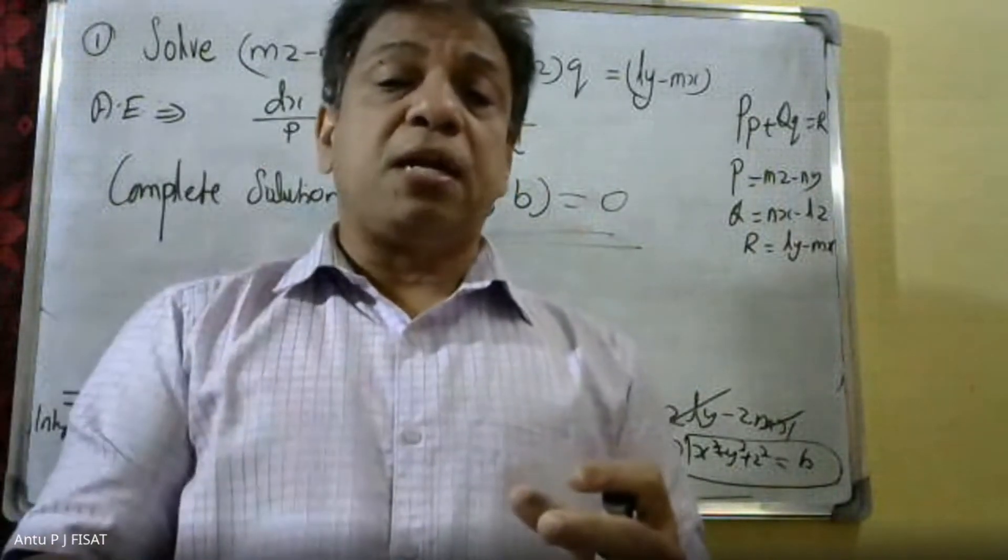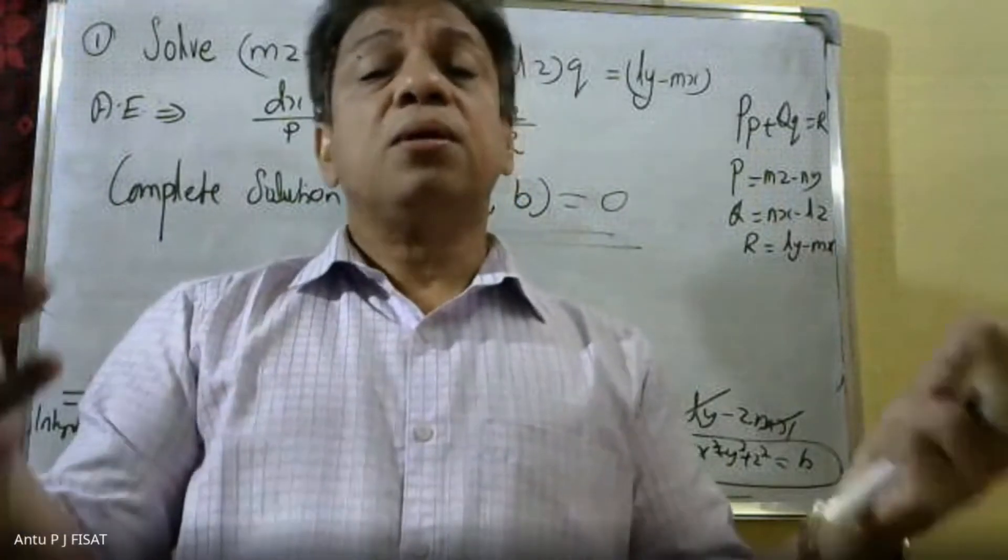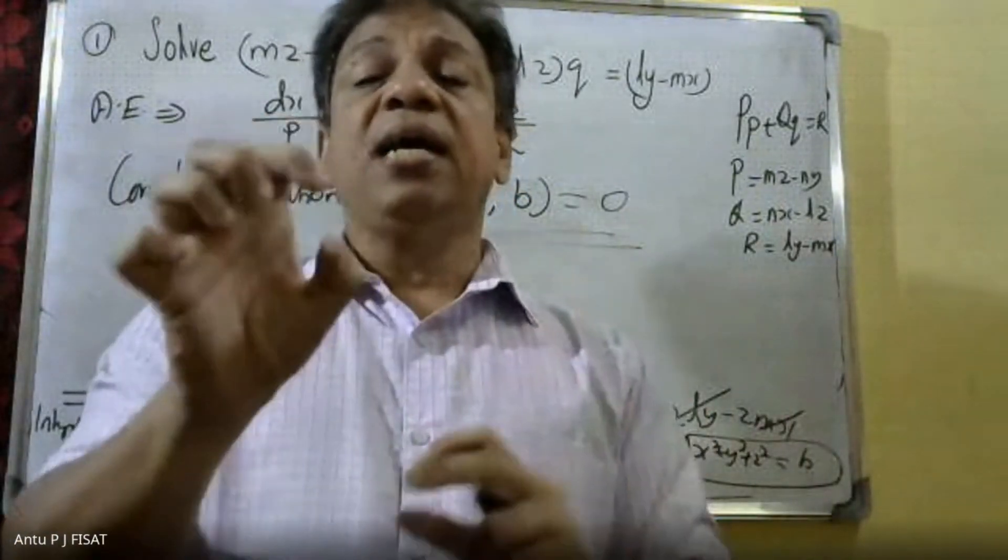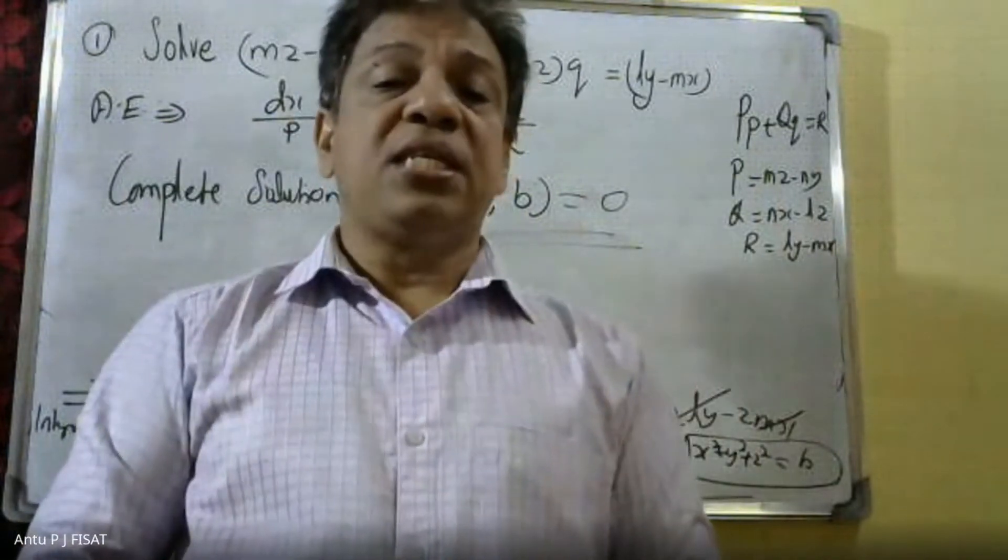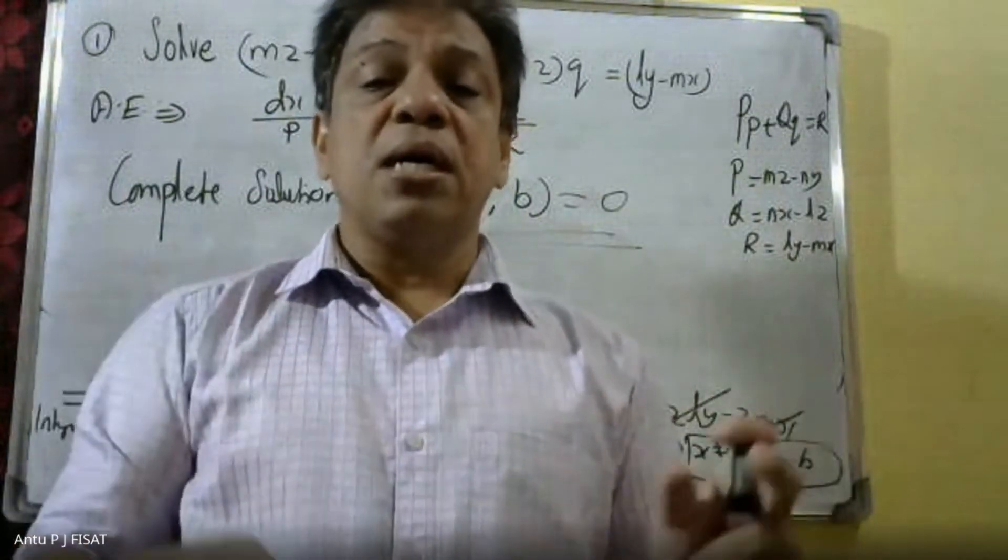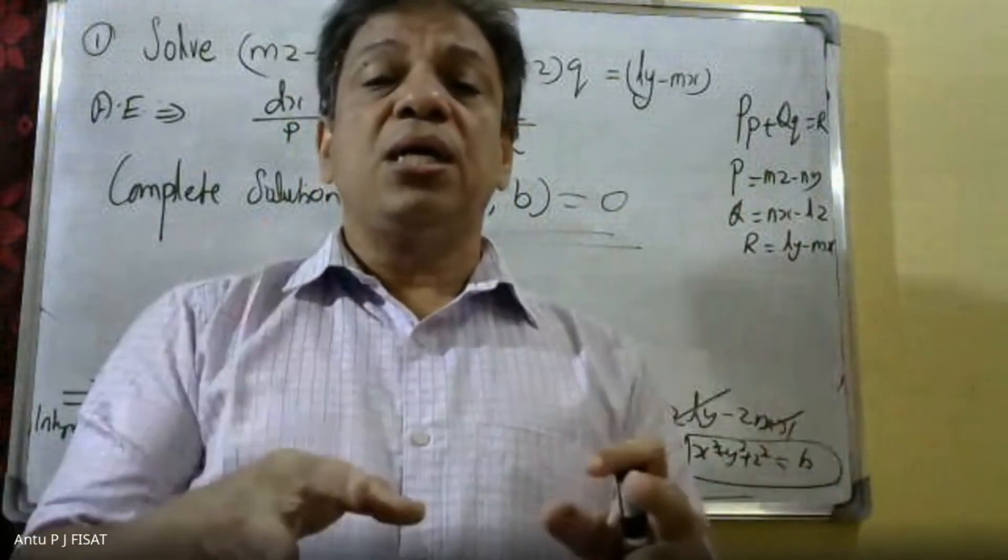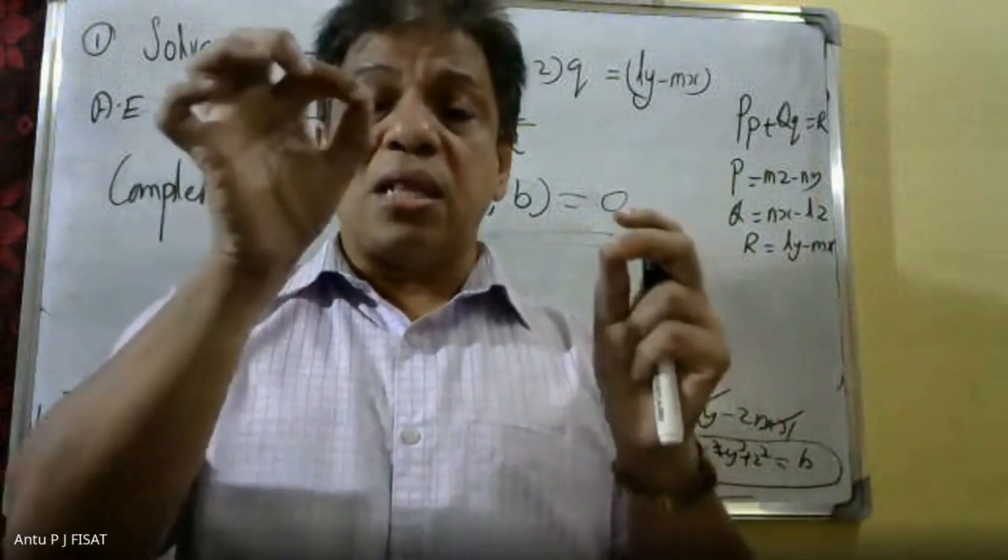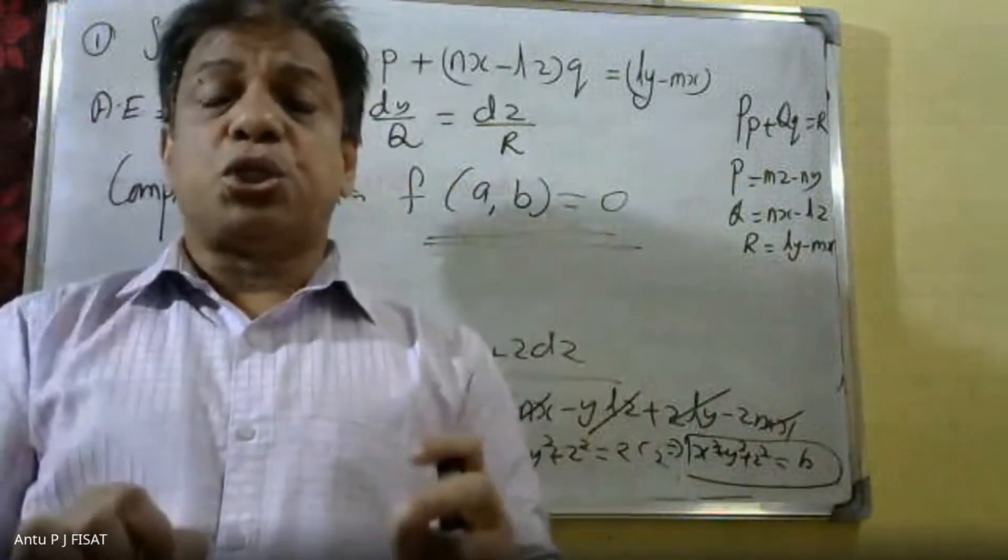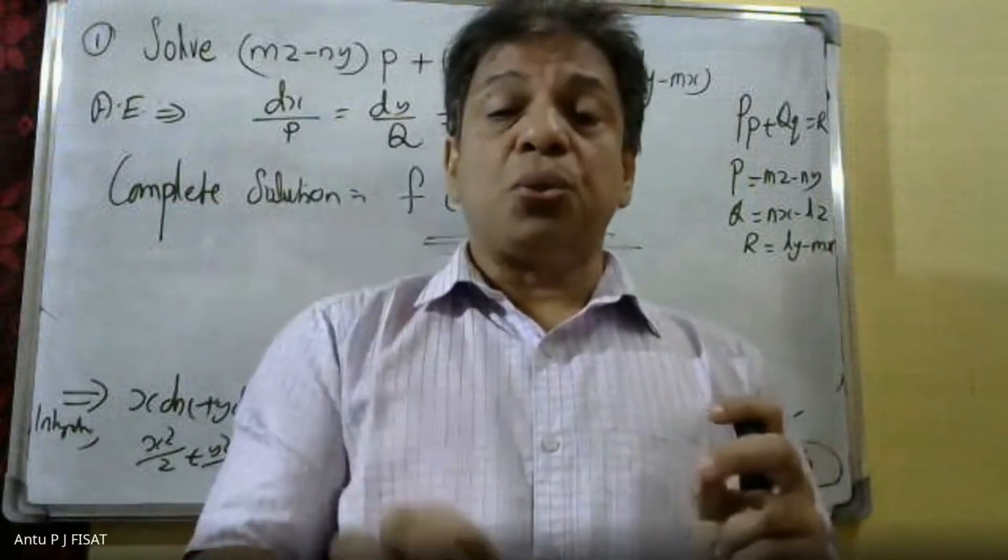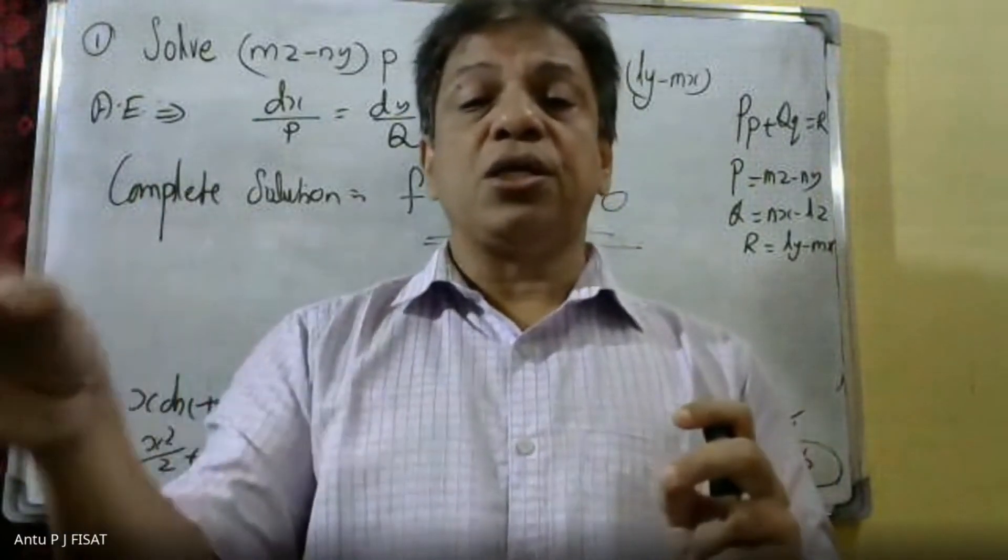We have to choose the multipliers, constant and variable, to make the denominator zero. With u = A and v = B, the complete solution is F(A, B) = 0.